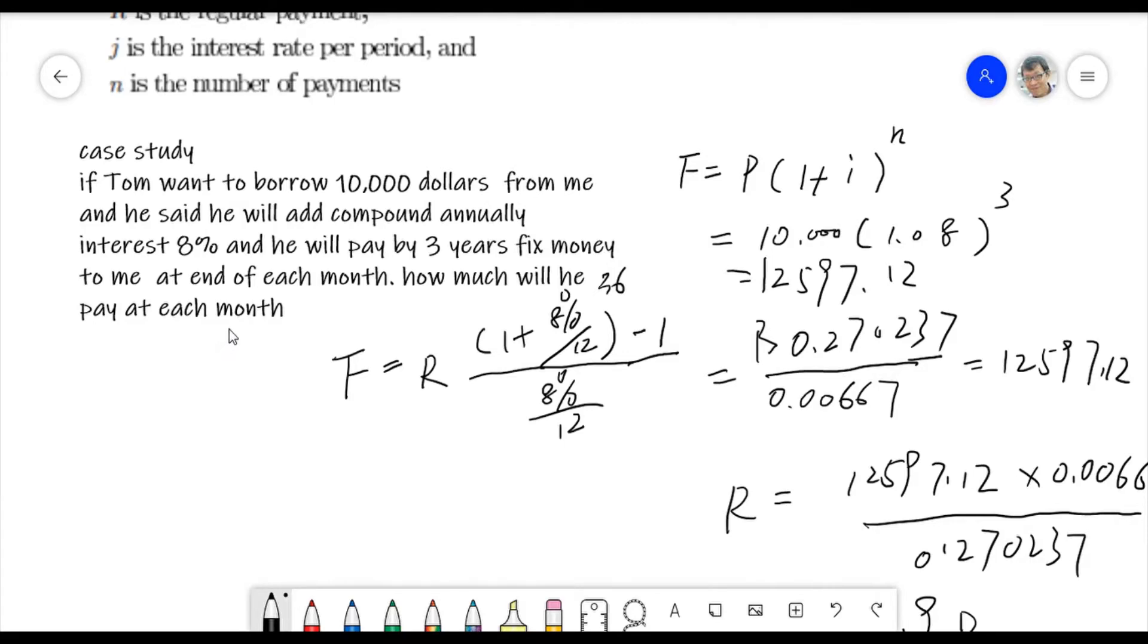So let's see the first one. First one is I do two case study. If Tom, Tom is my friend, want to borrow $10,000 from me. Of course, I need to have that money first. And he said he will add compound annual interest. He will pay like 8% like annual interest. So this is a good friend. He even will pay interest to me. And how he will pay back, he will pay by three years by fixed money to me as we call annuity at the end of each month.